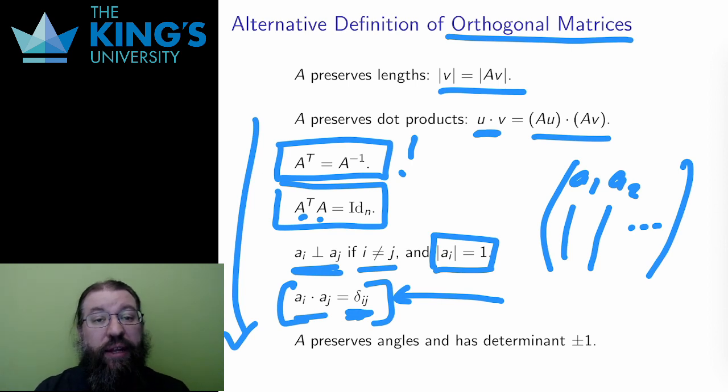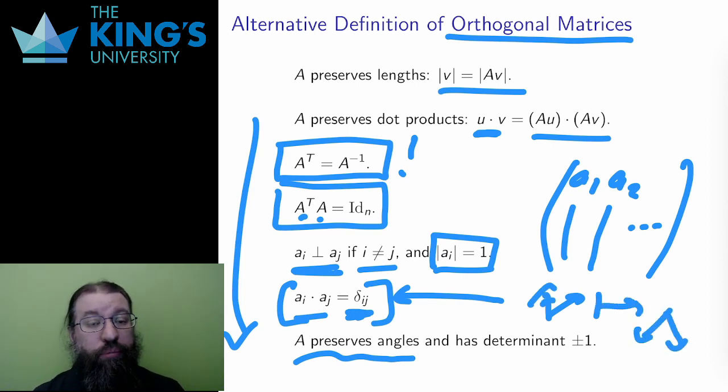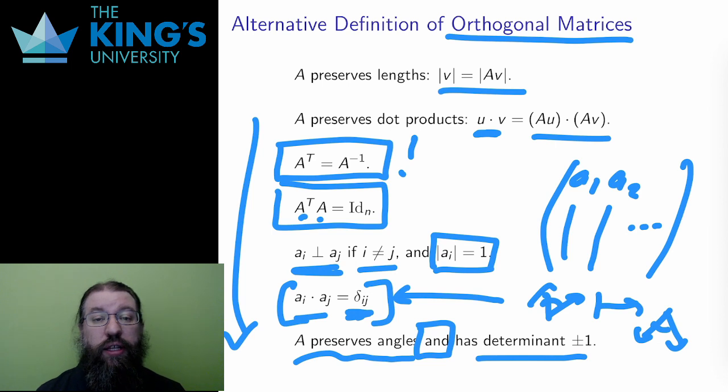Finally, there is another preservation property. And I find this one quite surprising. To preserve lengths turns out to be almost the same as preserving angles. Preserving angles means that if there is an angle between two vectors before the transformation, that angle is the same after the transformation, even if the two vectors have moved. It turns out that preserving angles is not quite enough to be equivalent to preserving lengths. I also need that the determinant should be 1 or -1. But these two together do guarantee that the matrix is orthogonal, that it preserves lengths.